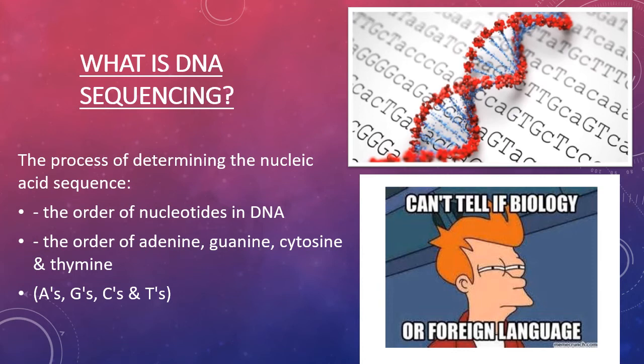What is DNA sequencing? It's the process of determining the nucleic acid sequence, so the order of nucleotides in DNA. And the nucleotides are adenine, guanine, cytosine, and thymine, so it's a way to look at the A's, G's, C's, and T's.